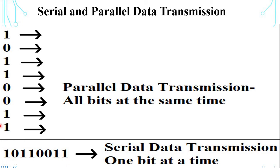The next definition is baud rate. Baud rate means the frequency of transmission of a serial data stream. Baud rate is defined as the number of bits transmitted per second.